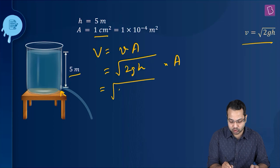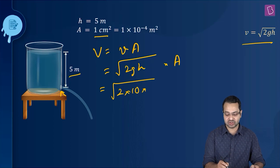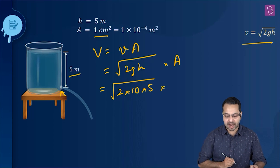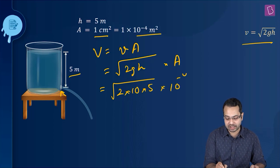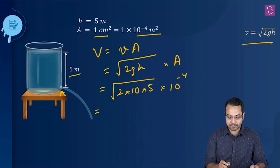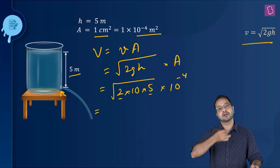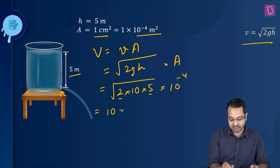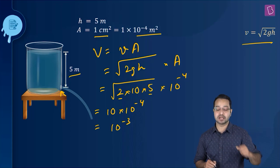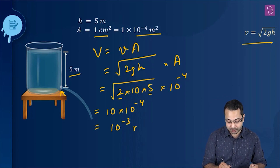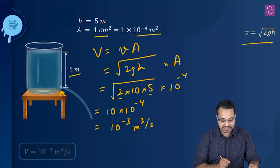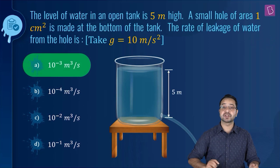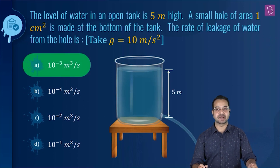The volumetric flow rate is v × A = √(2gh) × area. Substituting: 2 × g (10) × h (5) = 100, √100 = 10, multiplied by area 1 cm² = 10⁻⁴ m². This gives 10 × 10⁻⁴ = 10⁻³ m³/s. Option A is the correct answer.